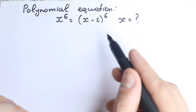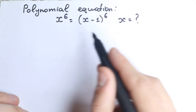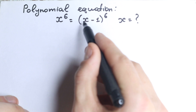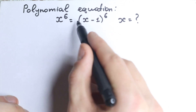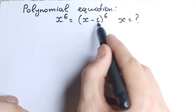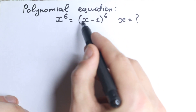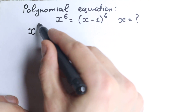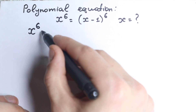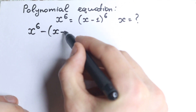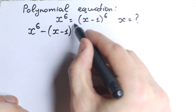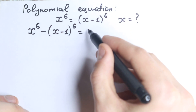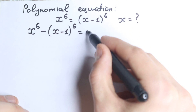I'm going to show you two methods. For the first method, let's bring the expression from the right hand side to the left hand side. So we have x to the sixth power minus (x minus one) to the sixth power equals zero.